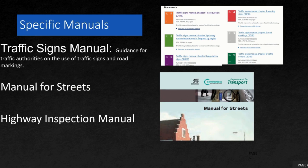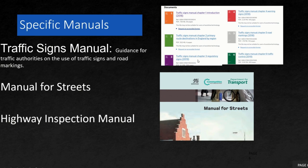Coming to specific manuals, the Traffic Signs Manual is very important if you are working on road markings and traffic sign positioning — where to place signs, what foundations to prepare, the height, and the distances to maintain between signs. It has around eight chapters, with one specifically on road markings.